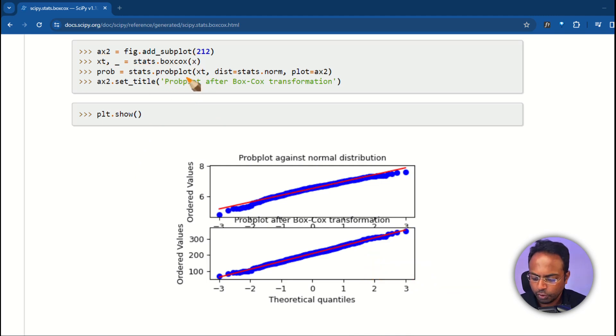And make sure whenever you are doing this probplot, this is called the QQ plot, quantile-quantile plot. Whenever you are doing this and you want to check for normal distribution, you need to make sure dist argument equals to stats.norm. This will make sure that the x, whichever you are plotting here, is being compared to what would be expected for a normal distribution. Norm stands for normal distribution.